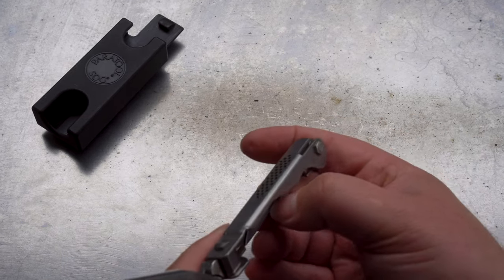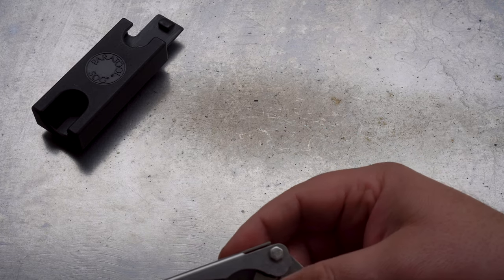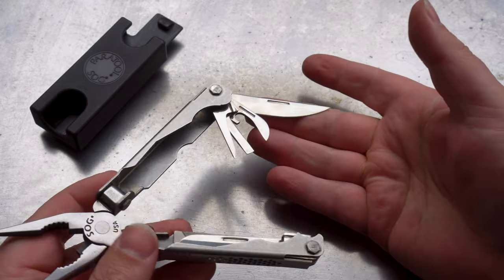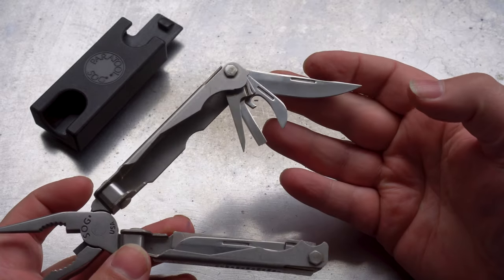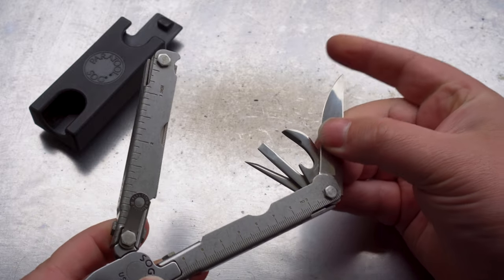Okay, so if we flip it over we've got some more tools on this side. This one starts off obviously with the back in focus. We have the reamer, another flat screwdriver, can opener, and main blade.